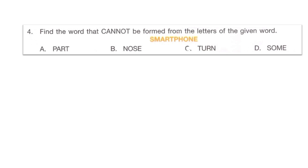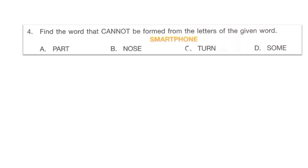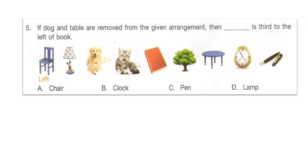Next question: find the word that cannot be formed from the letters of the word 'smartphone'. Is it option A: part, option B: nose, option C: turn, or option D: sound? Take the word and cancel out the letters if they appear in 'smartphone'. You'll notice that the letter U does not appear in 'smartphone', so you can safely choose option C: 'turn' as the right answer, because U is not part of the word 'smartphone'.